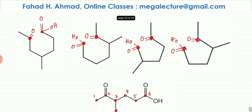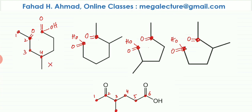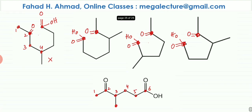Starting with option A's oxidation product and numbering the chain: C1, C2, C3, C4 — the branch is on C4, but in the target the branch must be on C3. Also, the second carbon had a double bond O which matched, but without a branch on C3, option A gives a different structure and is eliminated.